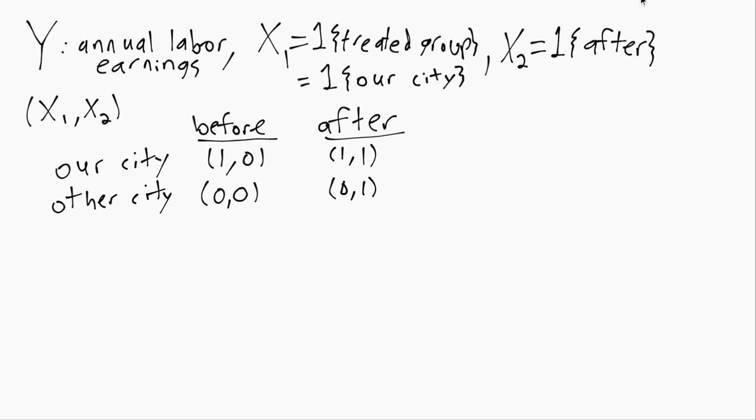So instead, the difference in differences does a more sophisticated approach where it uses all four of these values to try to estimate the causal effect, where if you imagine this is time going this way. So we have before and after